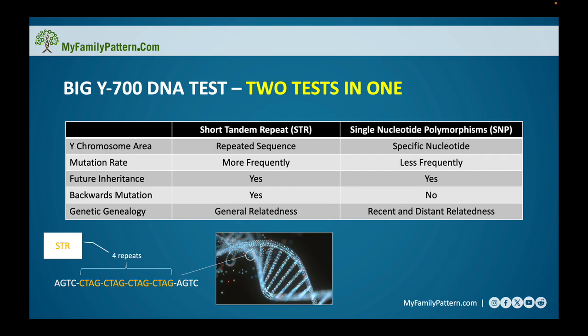SNPs look at a different part of the Y chromosome. Instead of looking at the patterns of these base chemicals — the A, G, T, and C — a SNP looks at one particular chemical at a particular location on the Y chromosome and checks what its value is. In the example shown here, it's looking at one particular value of T.